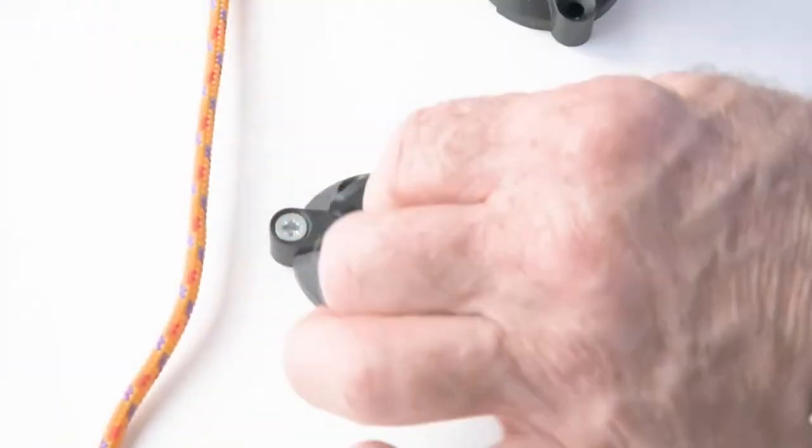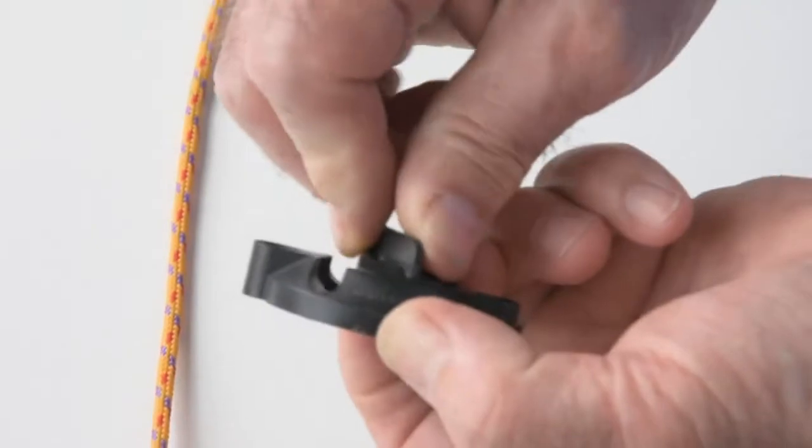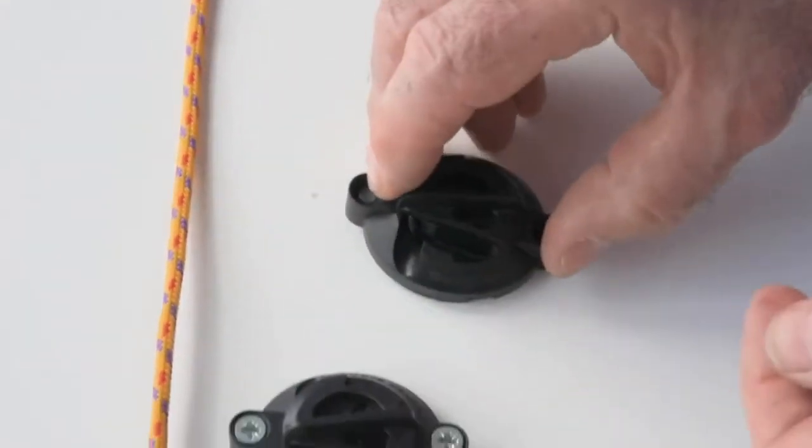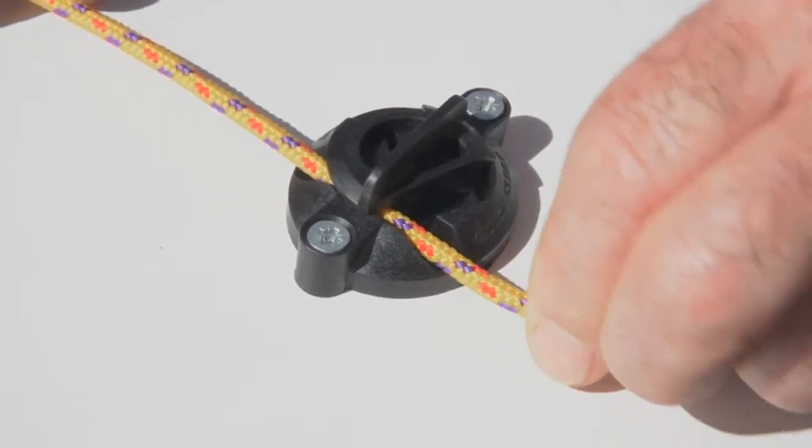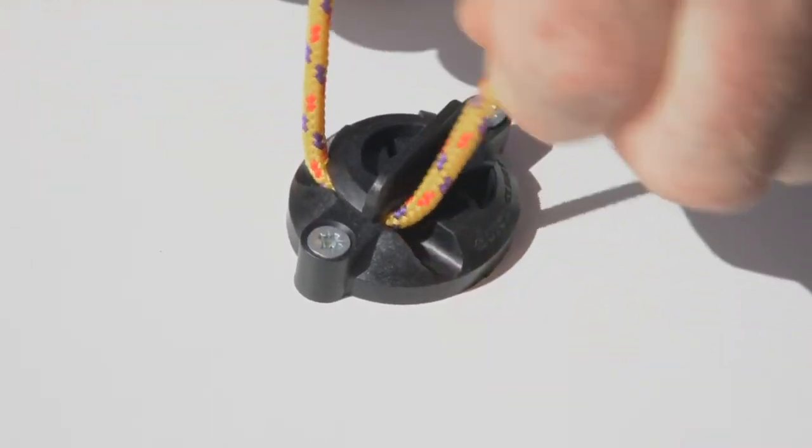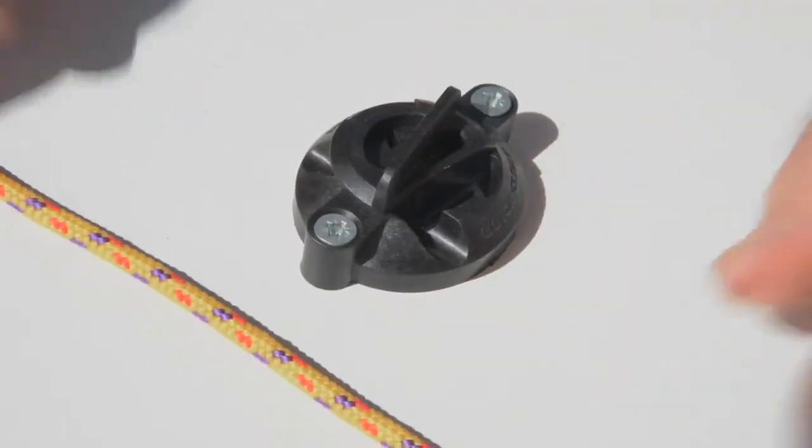It's a very simple construction. You can see a stainless steel spring on the inside, two-part moulding and these are perfect for kayaks, paddle boards, fenders, buckets, for anything where you need a quick tie-on with no knot.